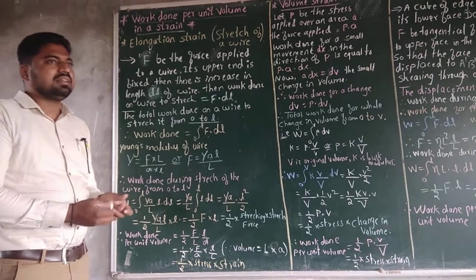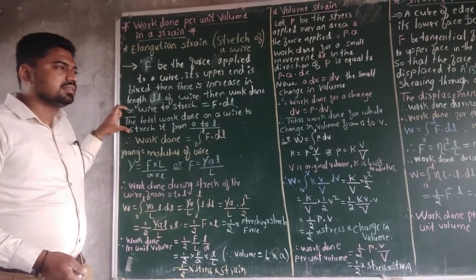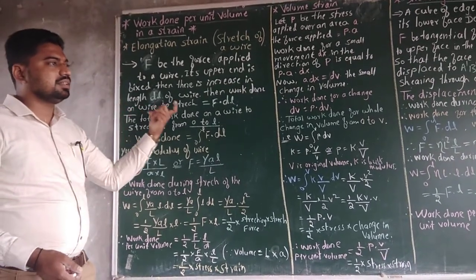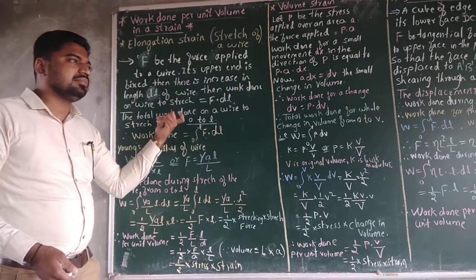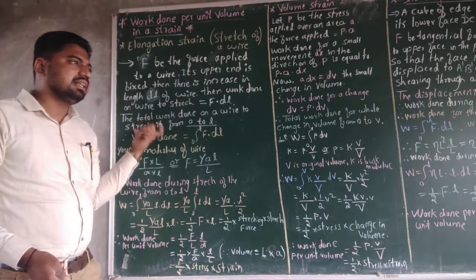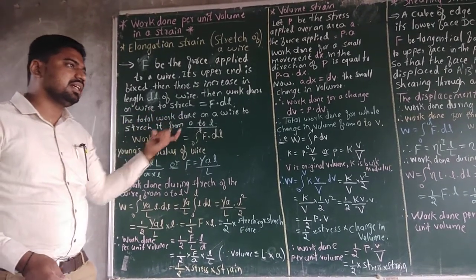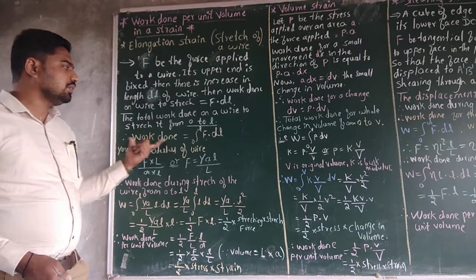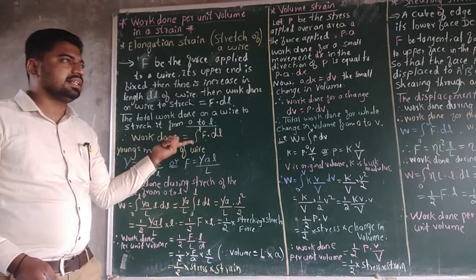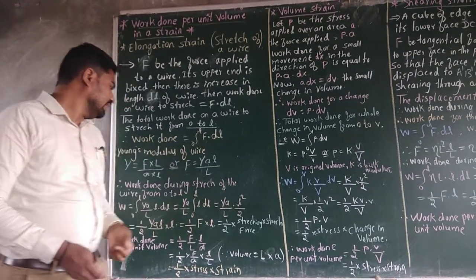The total work done you have to calculate from 0 to L. Take the limits 0 to L, then work done W equals integration from 0 to L of F into DL.